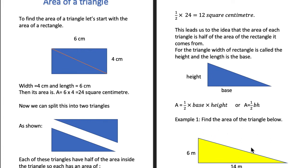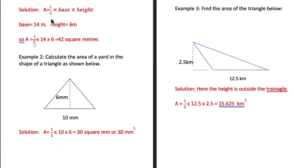Now let's have a look at an example. Find the area of the triangle below. We've got a triangle given to us and we want to find its area. The solution will be half times base times height. The base was 14 meters and the height was 6 meters, so the area will be half times 14 times 6, which comes to 42 square meters.